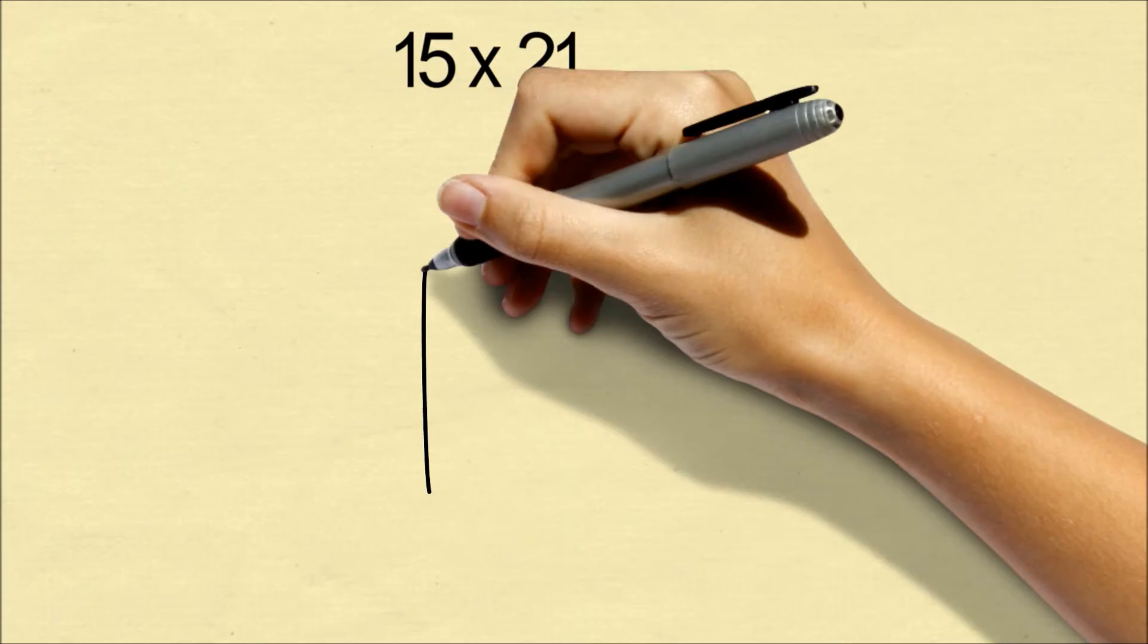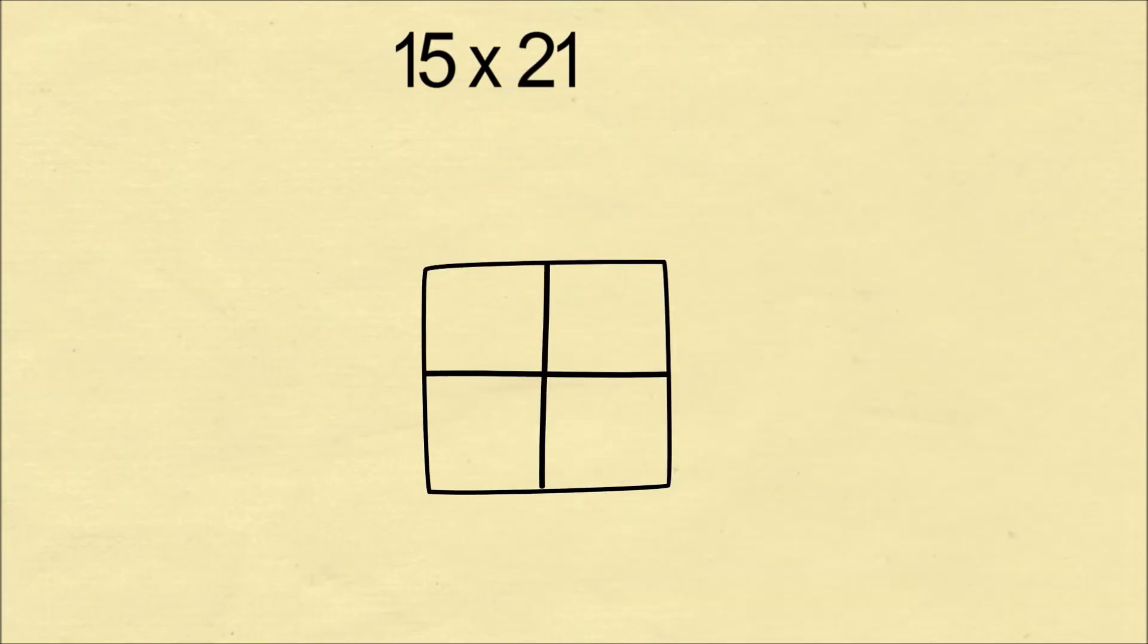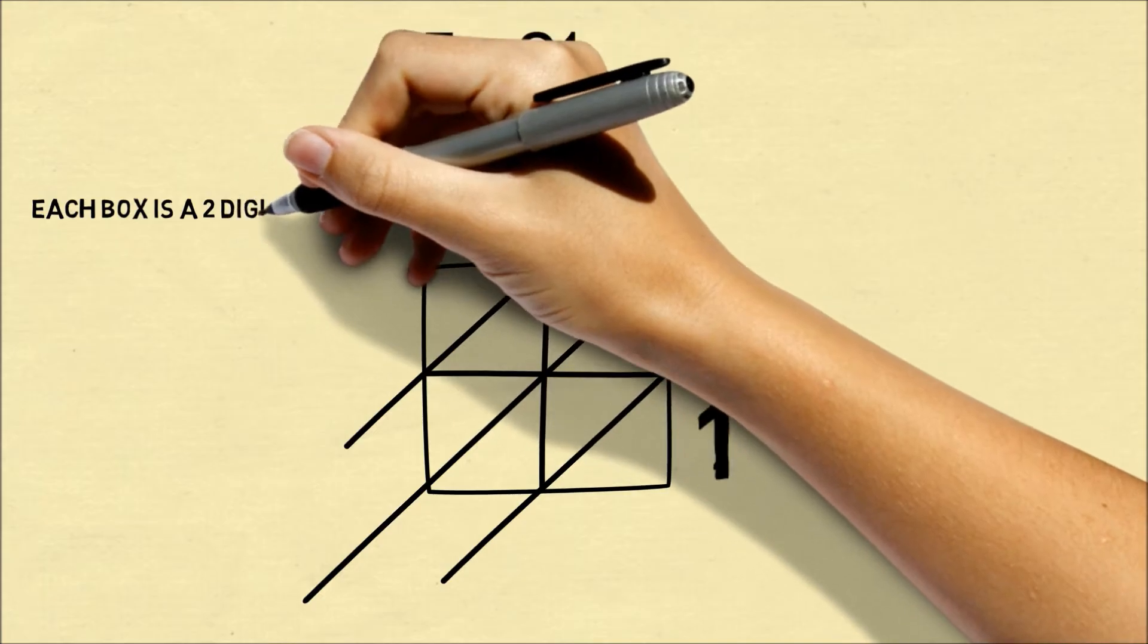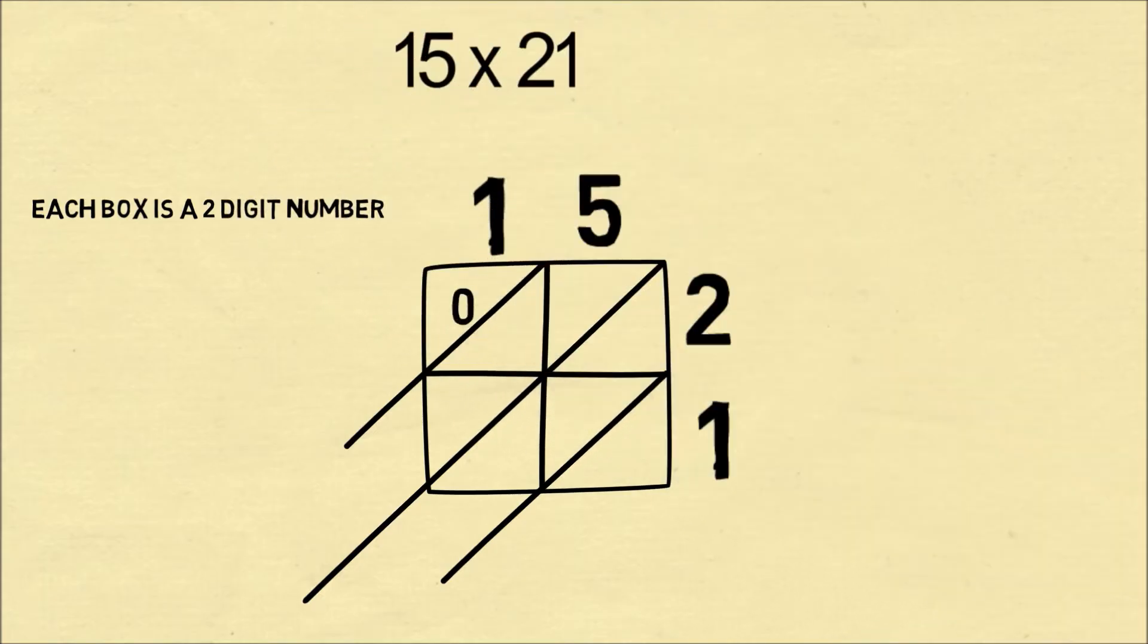Let's do another example of 15 times 21. We'll draw out our table, but this time we'll actually draw in diagonals, so it'll be easier to add up the numbers. When we multiply the numbers, we want to write it as a 2-digit number. So 1 times 2 is 02, 2 times 5 is 10, 1 times 1 is 01, and 5 times 1 is 05.